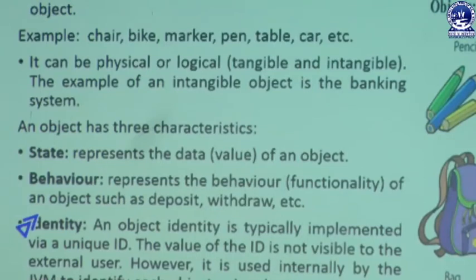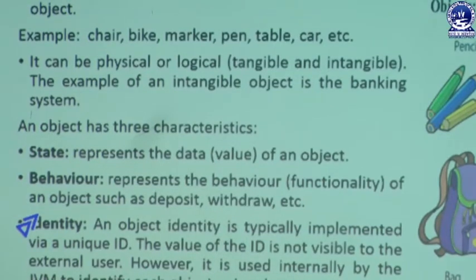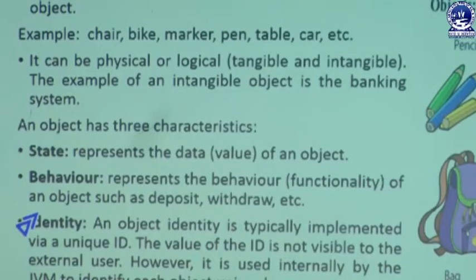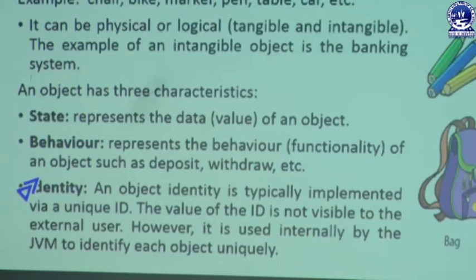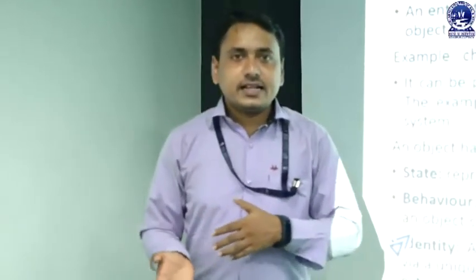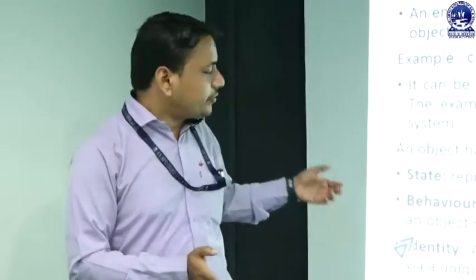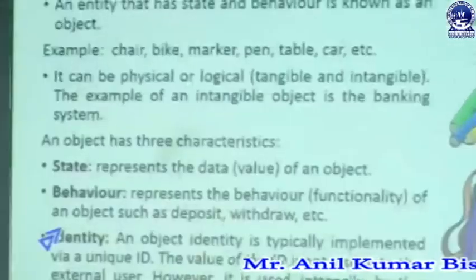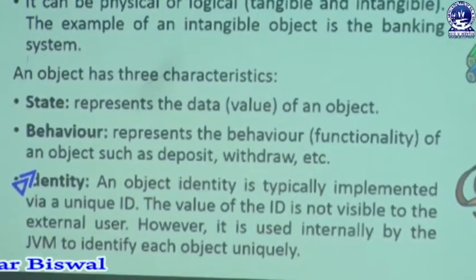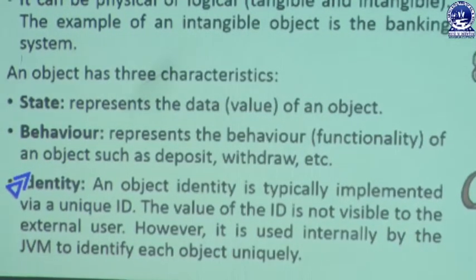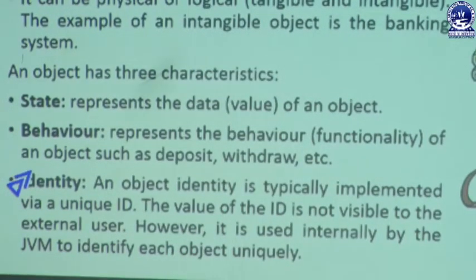Generally, an object has three characteristics: state, behavior, and identity. State represents the data or value of an object — every object contains some state that may be active or inactive. Behavior represents the functionality of an object, such as deposit, withdraw, etc. — these are related to the behavioral concept of an object.